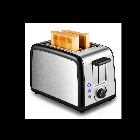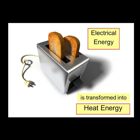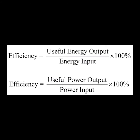The bread toaster is the quickest and most effective device to toast bread. It takes in electrical energy from the power outlet and converts it into heat and thermal energy very efficiently. To be the most efficient, according to the laws of physics, it needs to consume the maximum amount of electrical energy per second.